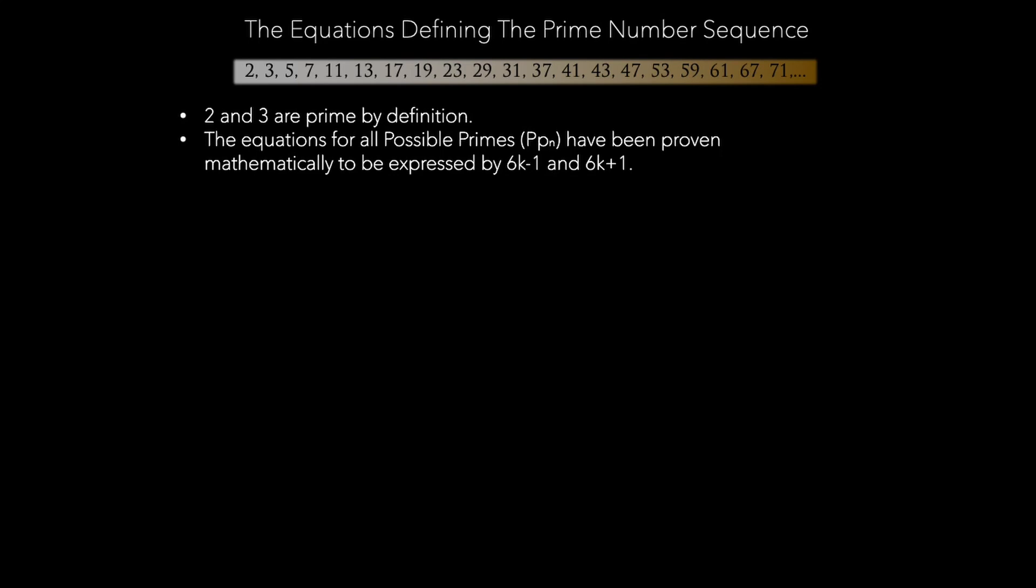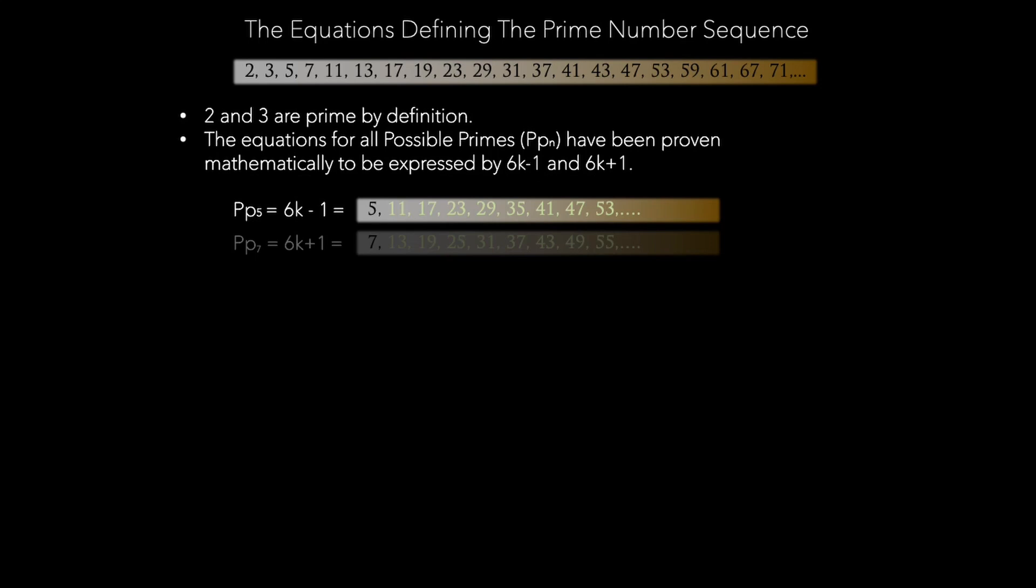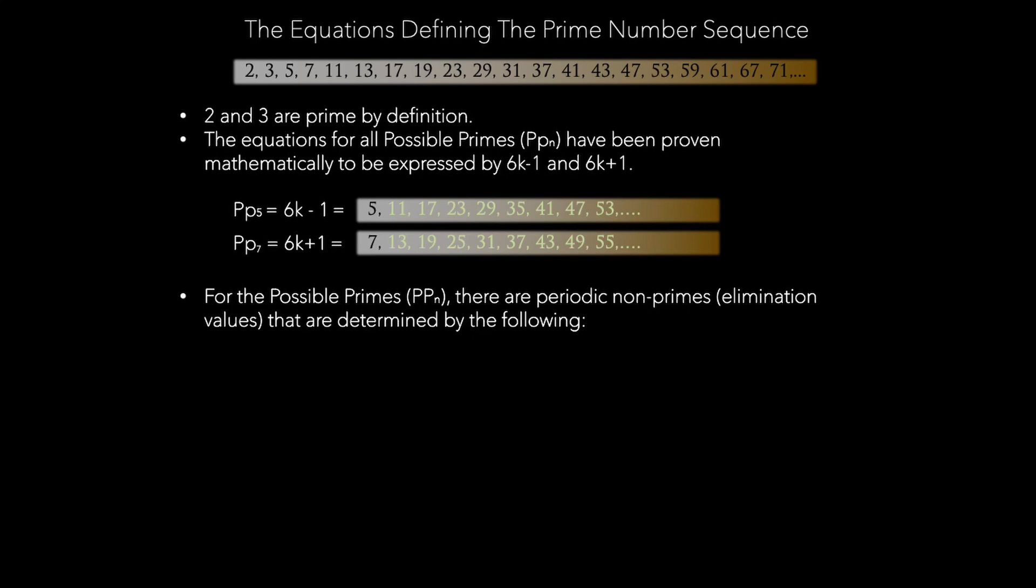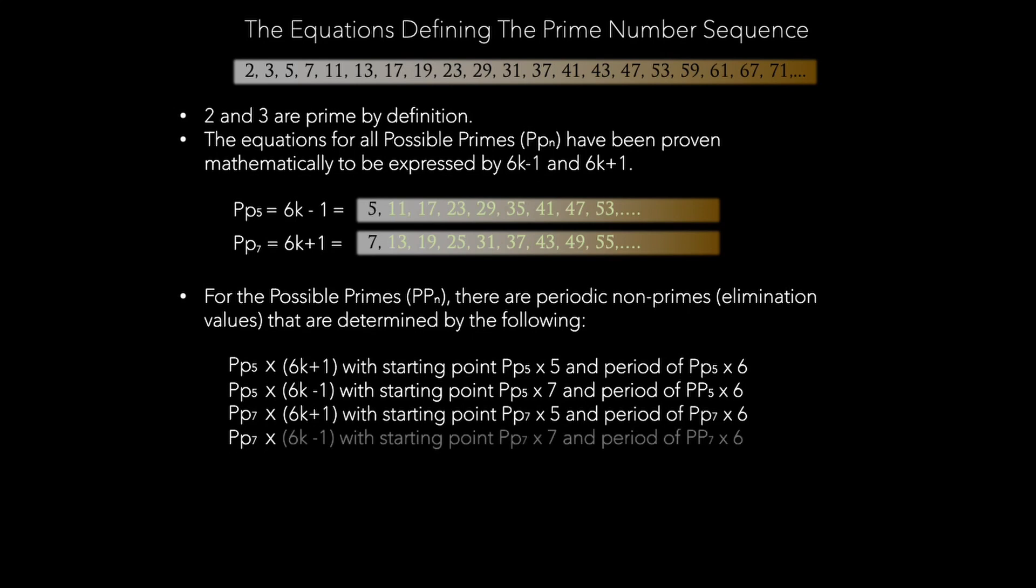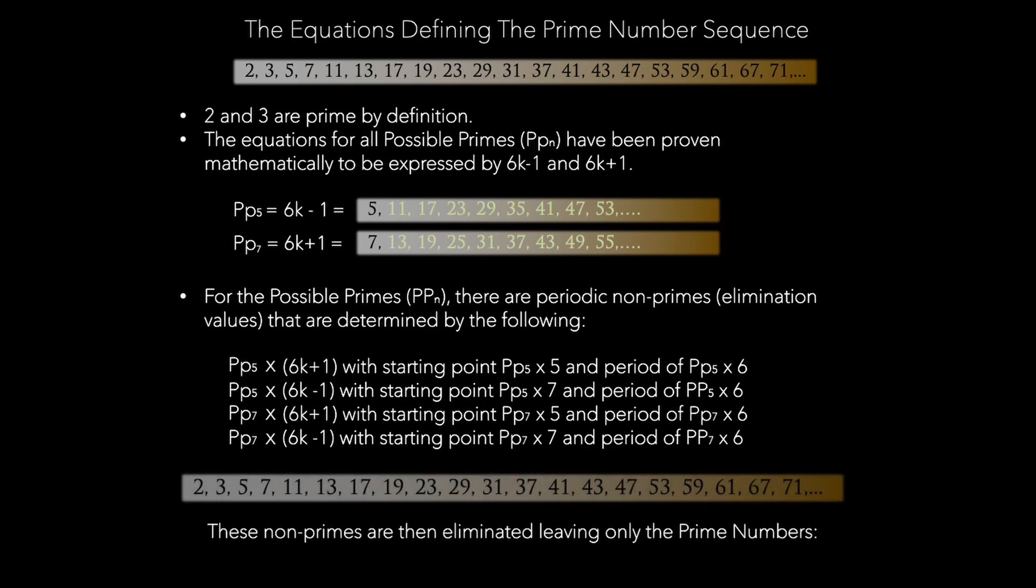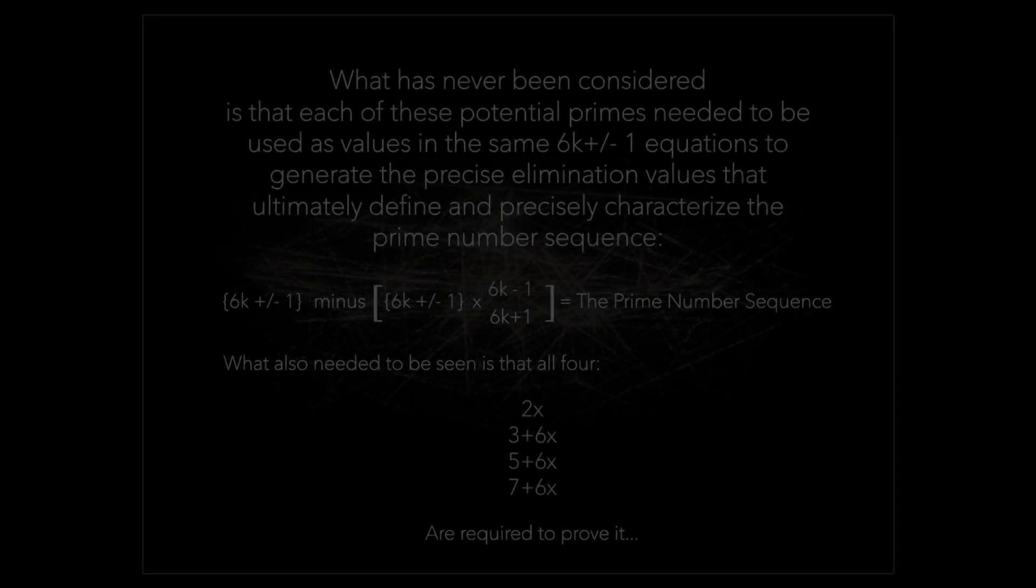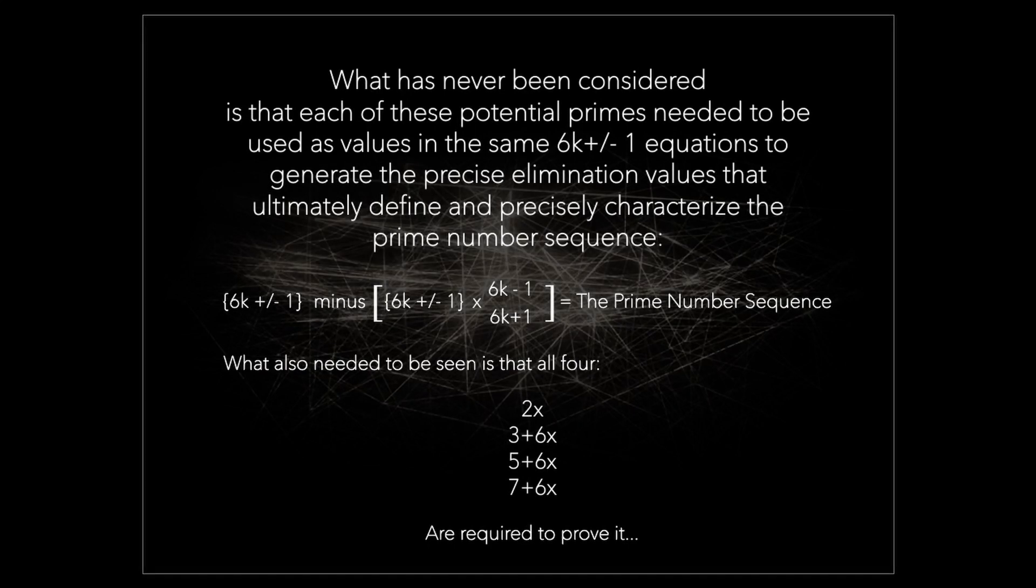Interestingly, what has been overlooked for centuries is that when you consider 6k plus or minus one, as the textbooks describe and as we've been taught, they create all possible prime numbers. That's been proven in history. However, the realization is that if you use those potential primes from 6k plus or minus one, and then multiply those values times the very equations, 6k plus or minus one, all of the elimination values would have been created, leaving us with nothing but the prime number sequence. What had never been considered is that each of the potential primes needed to be used as values in the same 6k plus or minus one equations to generate the precise elimination values that ultimately define and precisely characterize the prime number sequence.